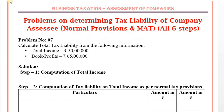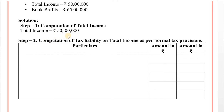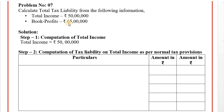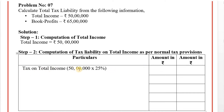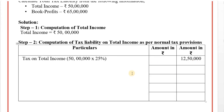First, computation of total income — this total income is already given in the problem. Now this is the tax liability. Turnover is below 250 crore, so the rate of tax is 25 percent. Tax on total income: 50 lakhs into 25 percent — it comes to 12 lakh 50 thousand.